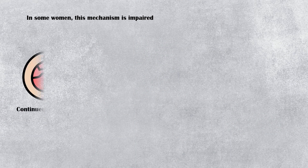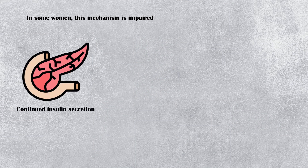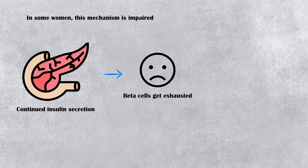However, in some women, this mechanism is impaired. With continuous secretion of insulin, pancreatic beta cells get exhausted, and the mother will fail to overcome the insulin resistance. As a result, she will develop gestational diabetes.